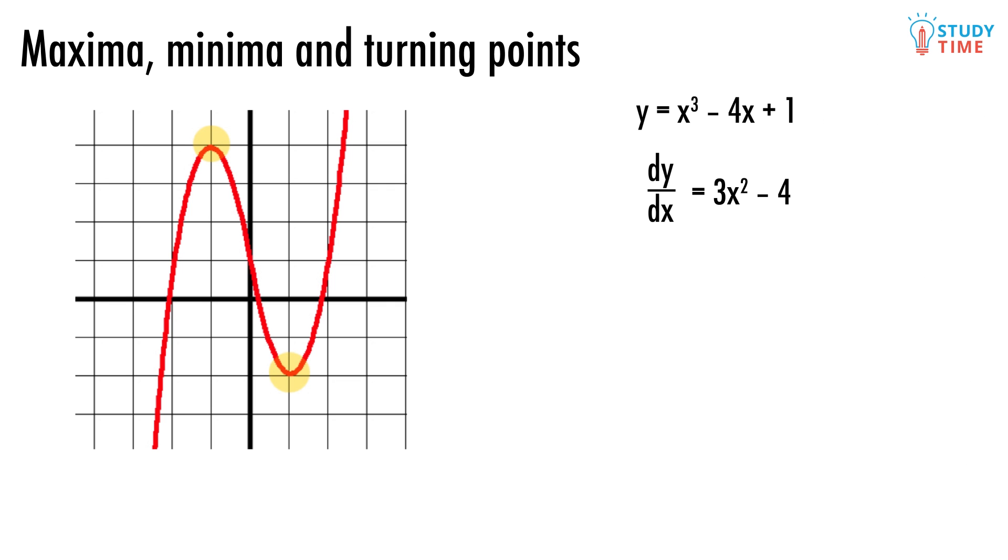We've highlighted the two turning points that this graph has. To the left of the y-axis there's a maximum, and to the right of the y-axis there's a minimum. Let's start out by differentiating the equation of the line. dy dx equals 3x squared minus 4.